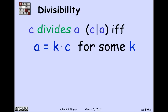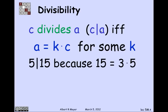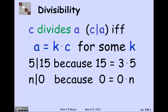There are a variety of synonyms for C divides A — A is a multiple of C, and C is a divisor of A. Let's practice: 5 divides 15 because 15 is 3 times 5. Every number n divides 0 — even 0 divides 0 — because 0 is equal to 0 times n.